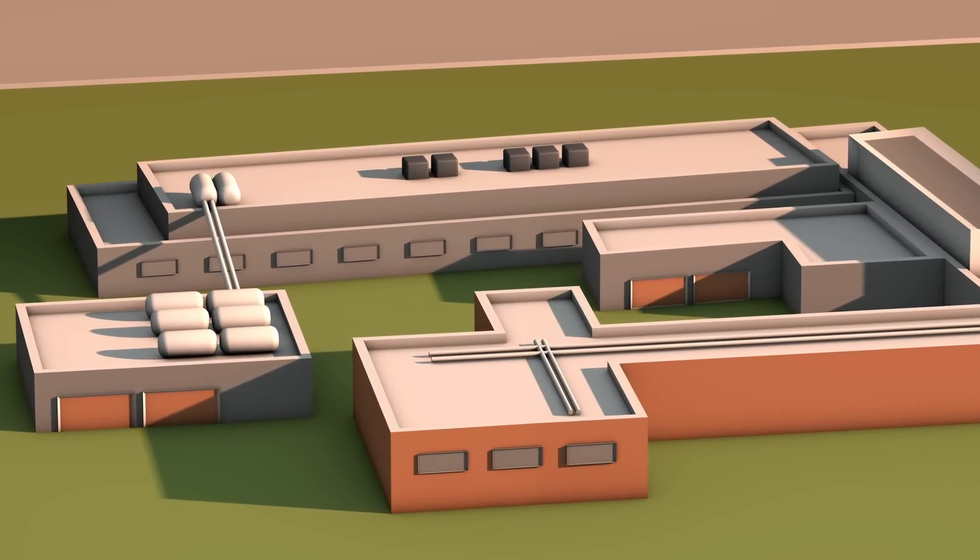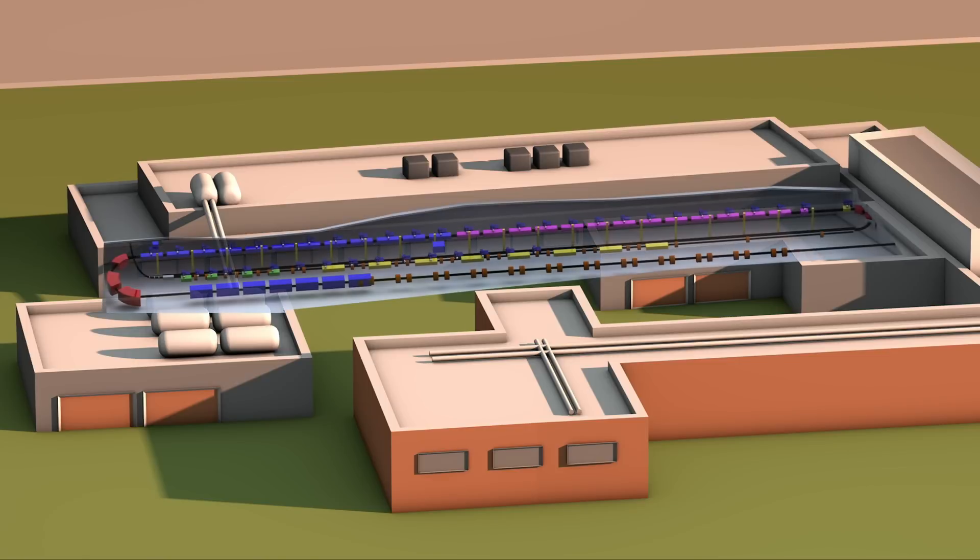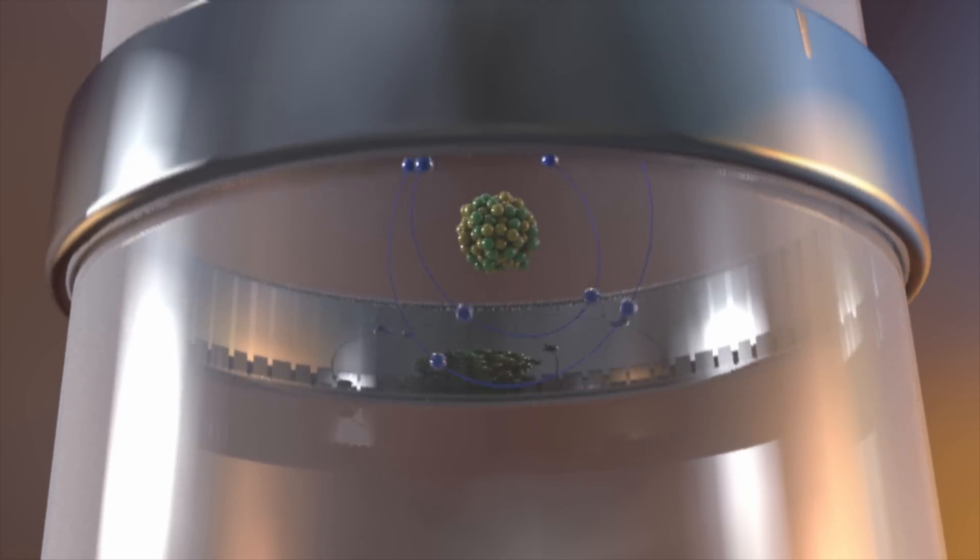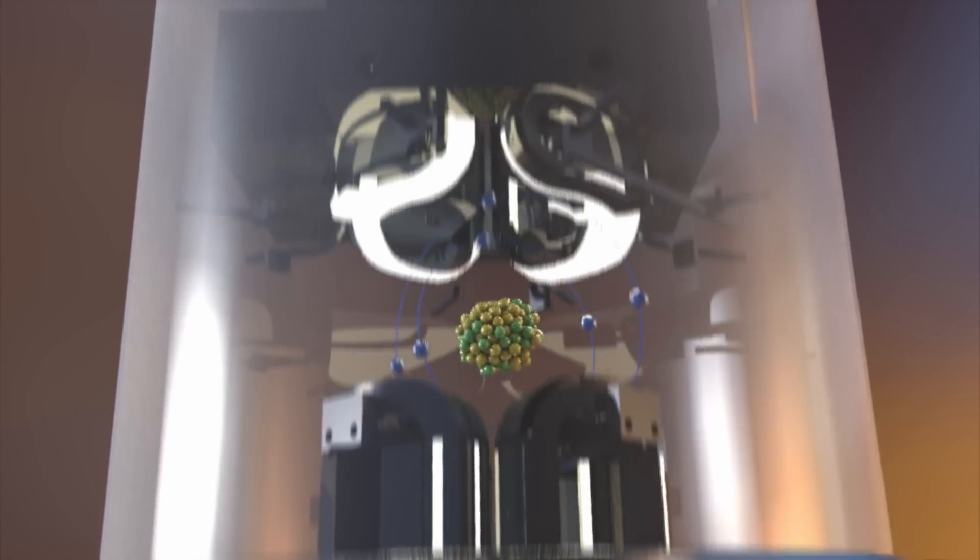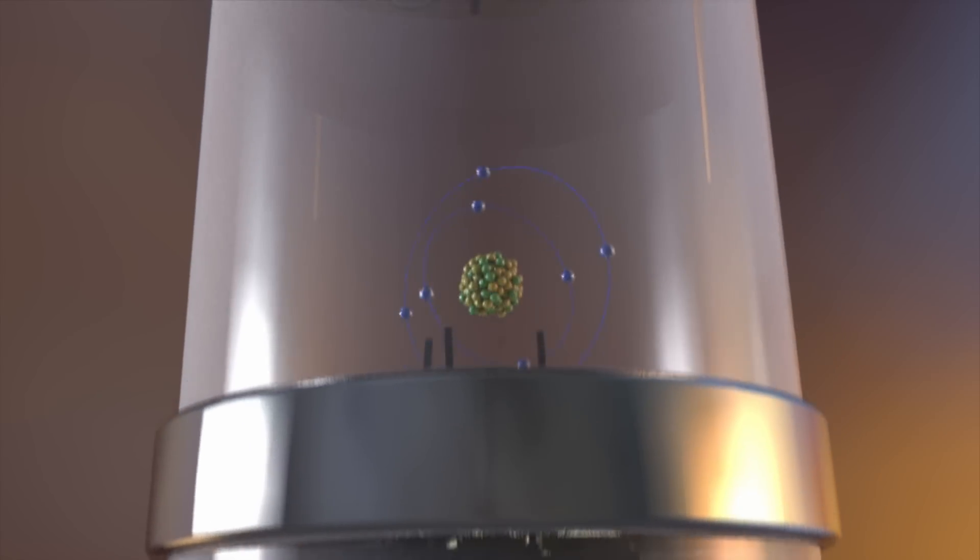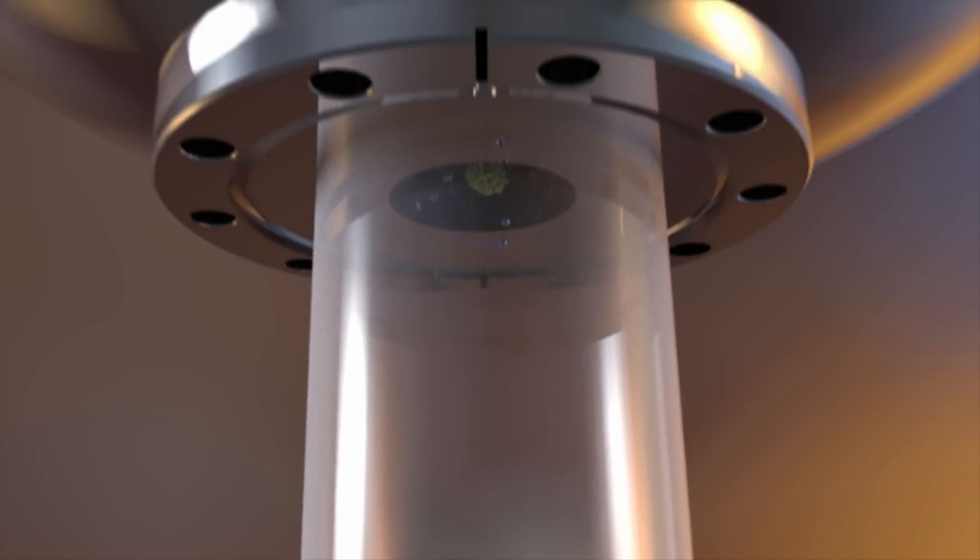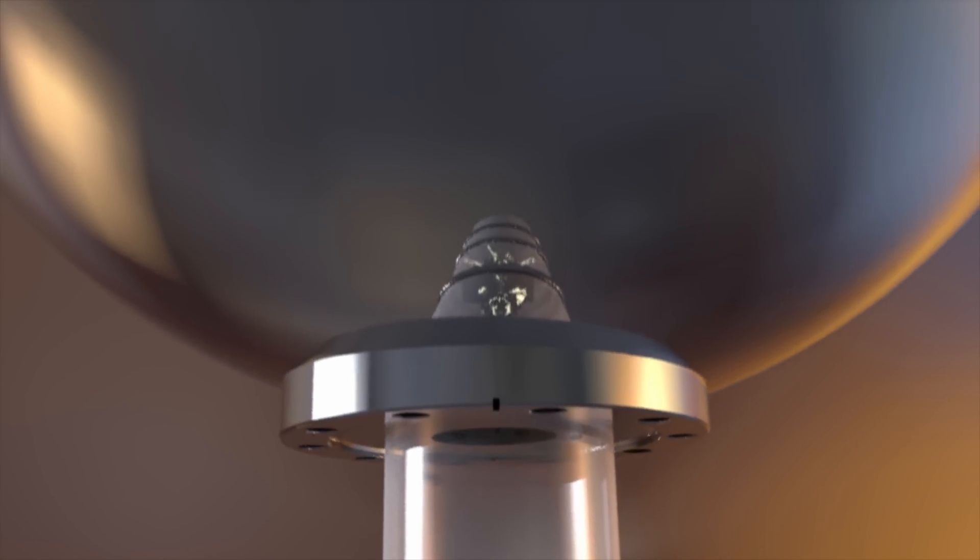They will be created at FRIB using a 1600-foot linear accelerator bent into segments and shaped like a paperclip. To create these rare isotopes, FRIB researchers will start with a collection of stable atoms and move them through a gas of electrons where their electrons are removed, resulting in positively charged ions.